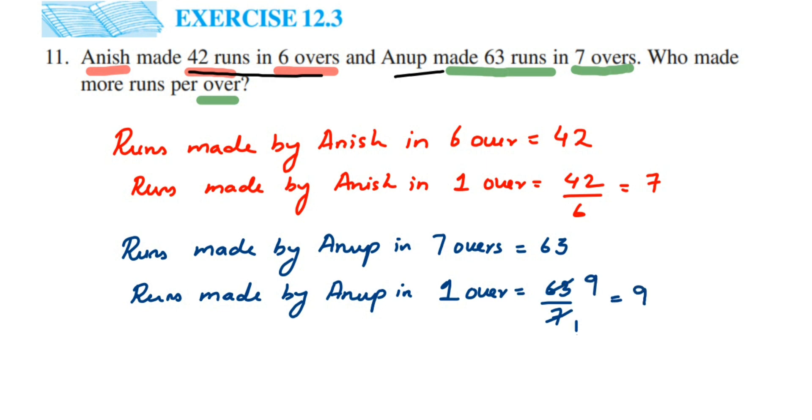So here if you see Anoop has made 9 runs and Anish 7. So if you compare more, 9 is greater than 7 which means Anoop has made more runs as compared to Anish. So that is the conclusion. Therefore, Anoop scored more runs than Anish.